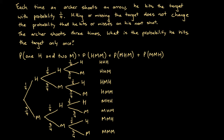We're particularly interested in three outcomes: H M M, M H M, and M M H. For H M M, to find the probability we multiply the probabilities on each branch associated with that path. The probability of the first hit is 1/4, multiplied by the probability of a miss, which is 3/4, multiplied by another miss, which is 3/4. That gives us 1 × 3 × 3 = 9 over 4 × 4 × 4 = 64, so the probability of H M M is 9/64.